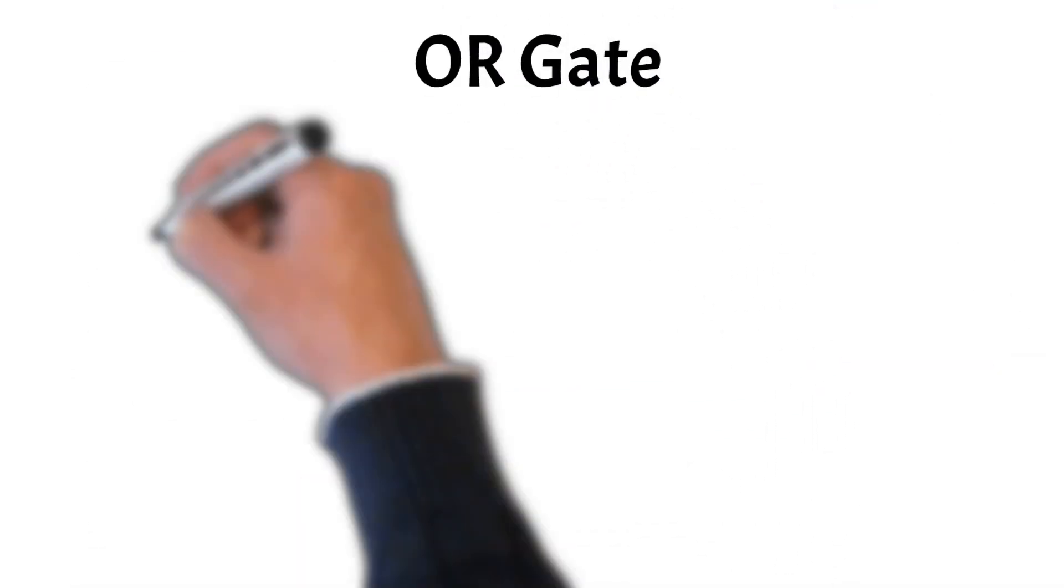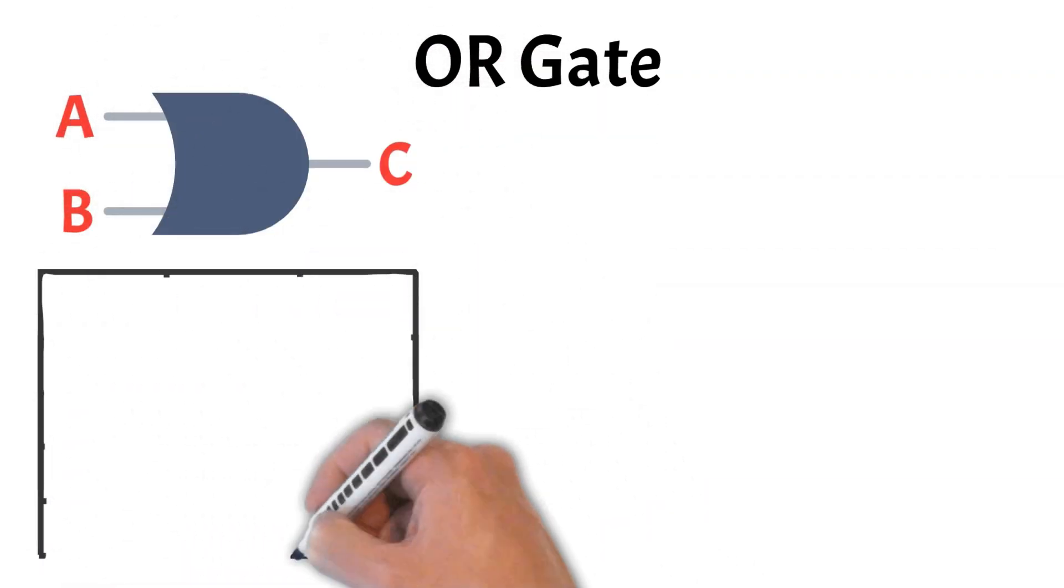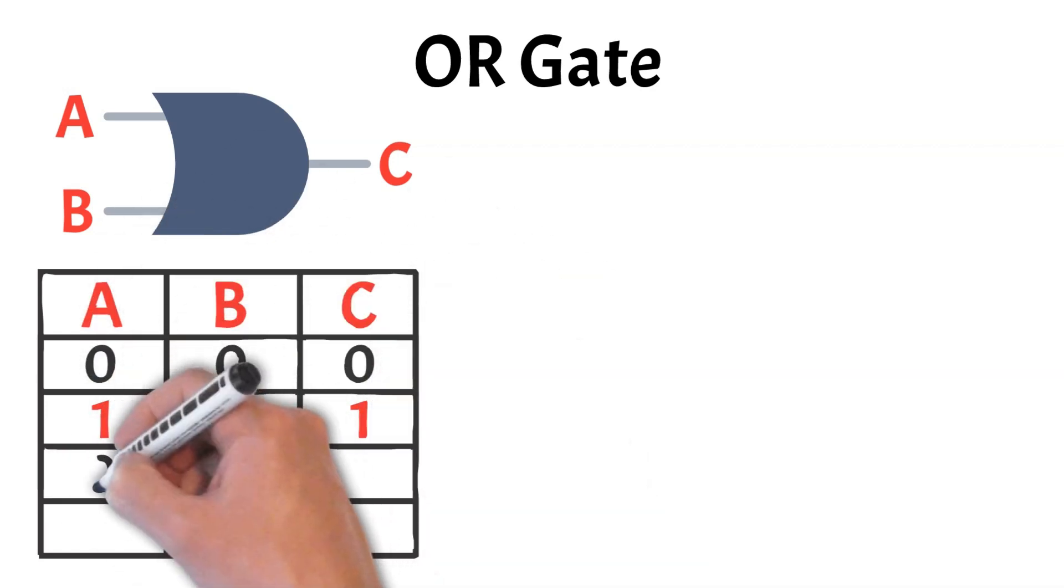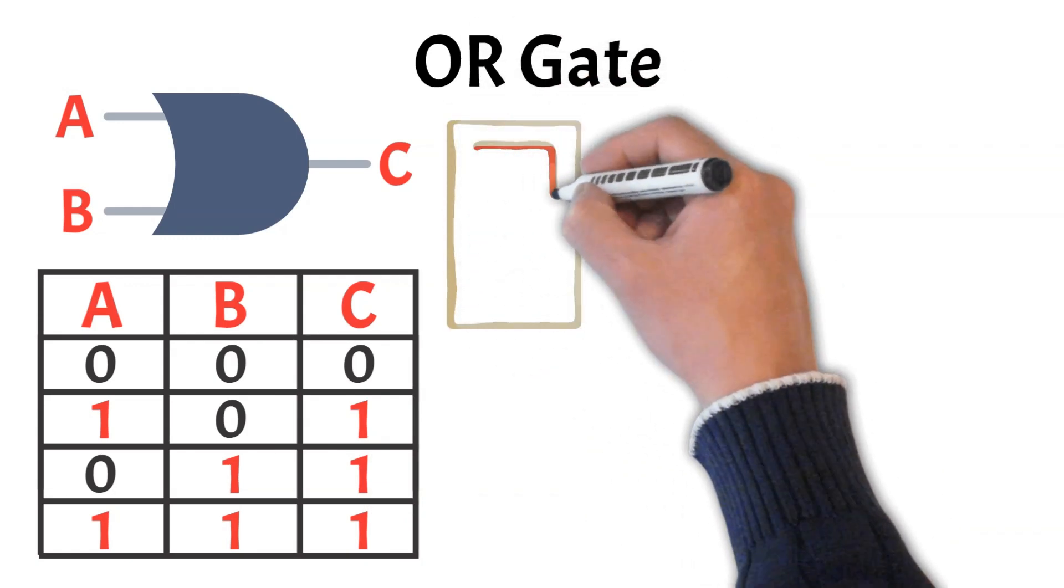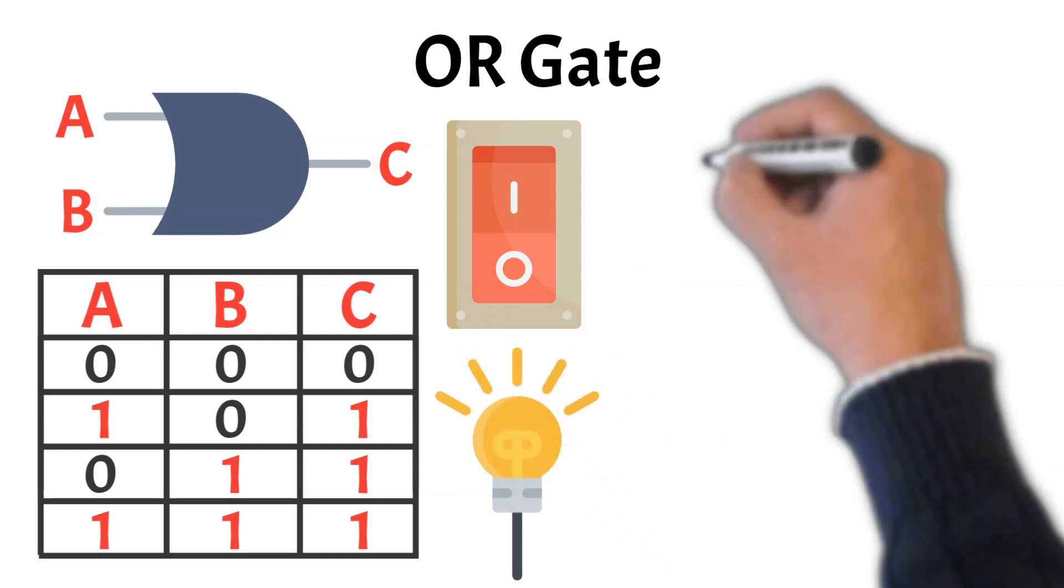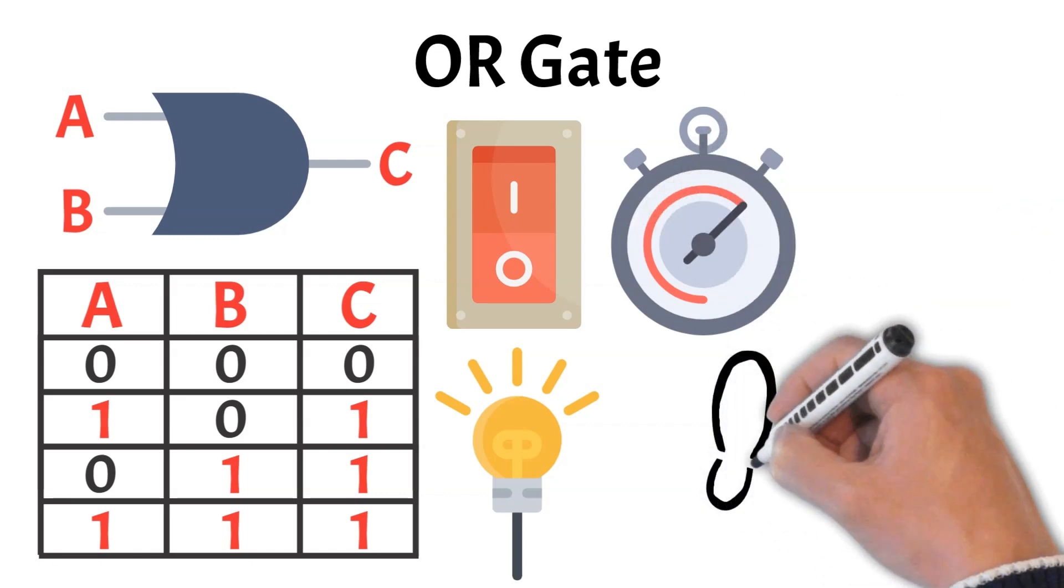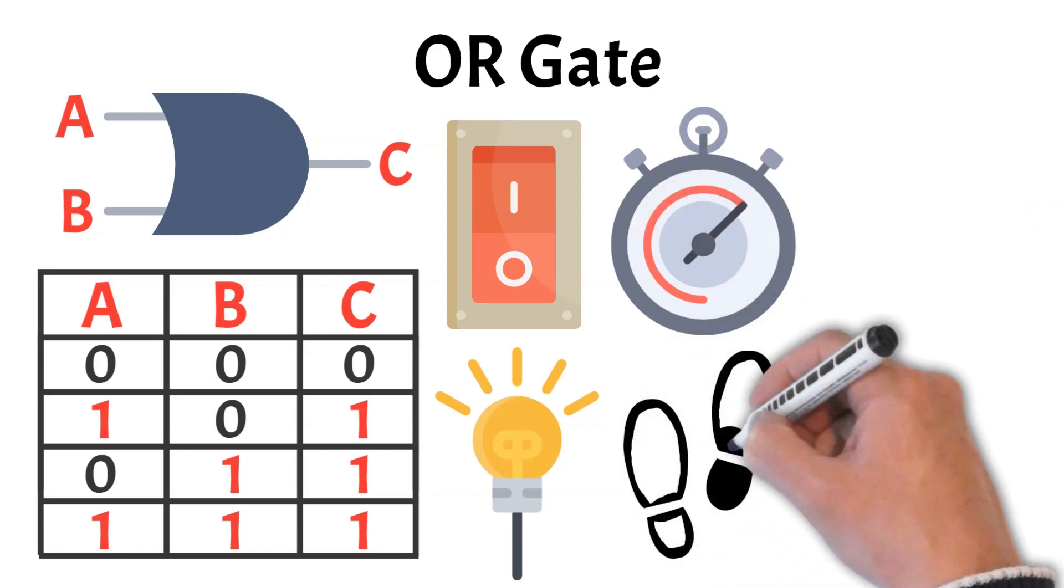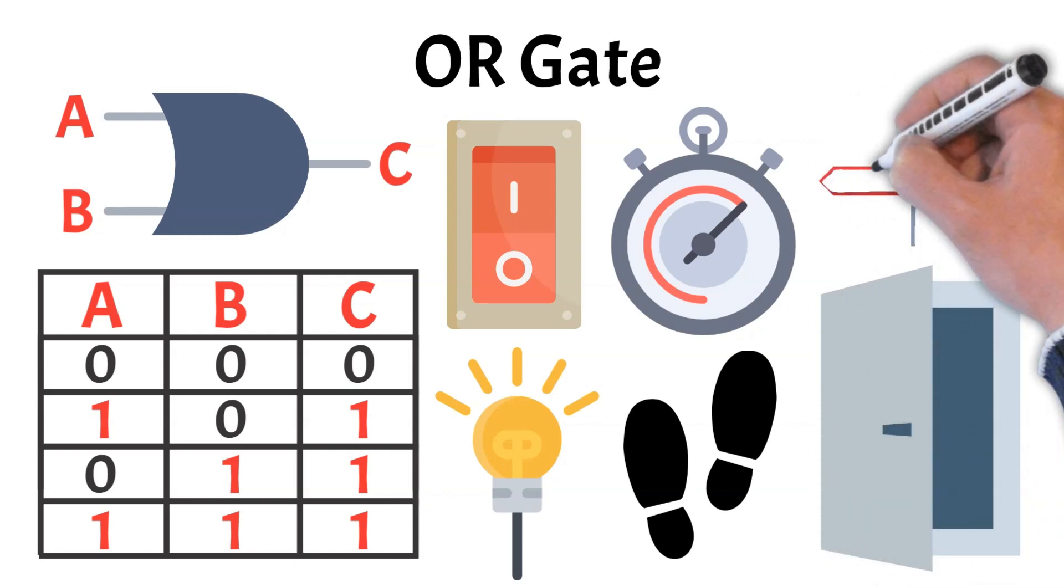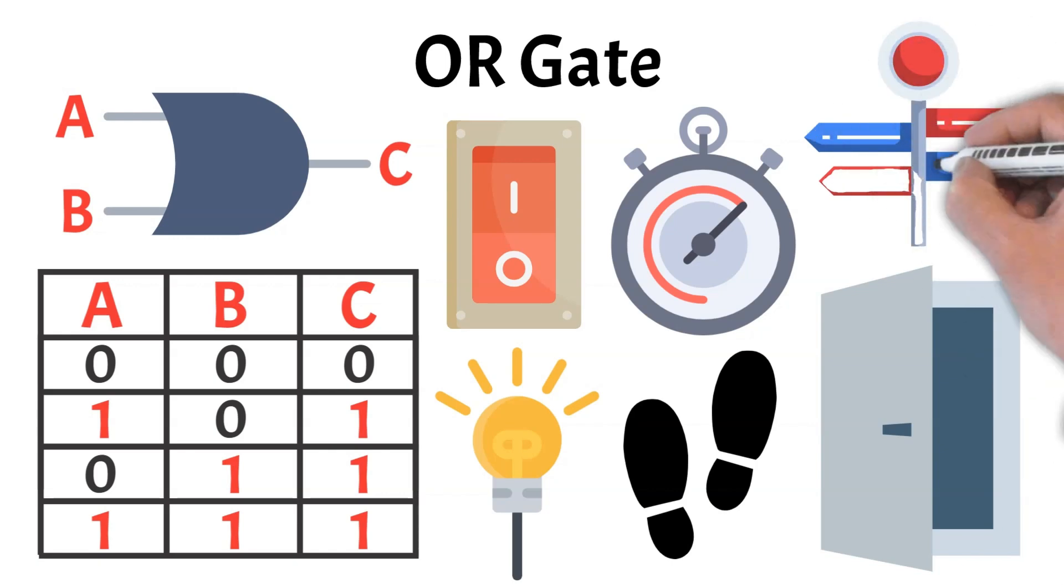Next up is the OR gate, which works a bit more generously than the AND gate. It outputs a one if at least one of its inputs is one. That means the output is only zero when all inputs are zero. You can think of it like a room with two light switches wired in parallel. If either switch is flipped on, the light turns on. This makes OR gates useful when a system should respond to any one of multiple conditions being true, such as a device that activates if either motion is detected or a door is opened. Visually, the OR gate symbol has a curved input side that narrows to a point at the output, distinguishing it from the AND gate.